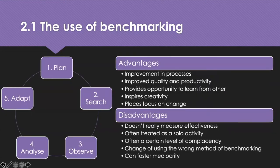The process for benchmarking starts with firstly planning — determining the process to benchmark and measuring performance of your own process. Secondly, searching and identifying your benchmark partner. Thirdly, observing — understanding and documenting the benchmarking partner's performance and practice. Fourthly, analysing the gaps and performance to find the causes. And the fifth and final step is to adapt — to plan for the implementation of improvements and to monitor the progress.